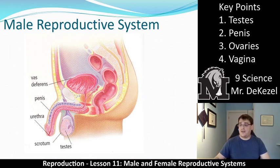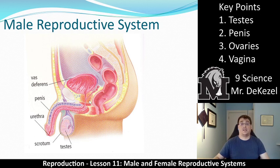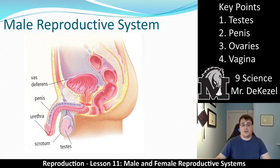They are not within the body like the ovaries are for a female — they have different temperature requirements and that's the main reason they are outside of the body. We then have the tube that leads from the testes towards the penis. It actually curls up and around to enter here. So that is known as the vas deferens — it is the tube through which sperm travels to eventually get to the penis where it can be expelled.